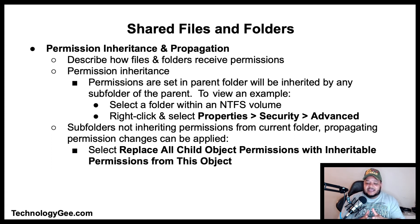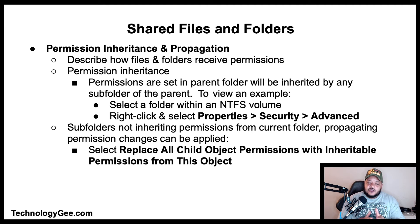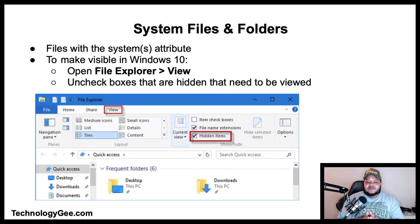Permission inheritance and propagation describe how files and folders receive permissions. Permission inheritance means any permissions set in the parent folder will be inherited by any subfolder of the parent. To view an example, select the folder within an NTFS volume, right-click it, and select Properties > Security > Advanced. Subfolders that are not inheriting permissions from the current folder — propagating permission changes can be applied by selecting 'Replace all child object permissions with inheritable permissions from this object.'